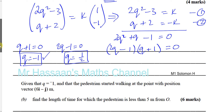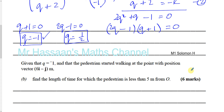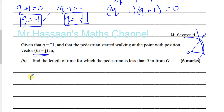Now part B says: given that q = -1, and that the pedestrian started walking at the point with position vector 6i - j, find the length of time for which the pedestrian is less than 5 meters from O. The pedestrian is changing position depending on time because he's going at a certain velocity. The position vector of the pedestrian R_P is given by R₀, which is his initial position, plus his velocity times time.